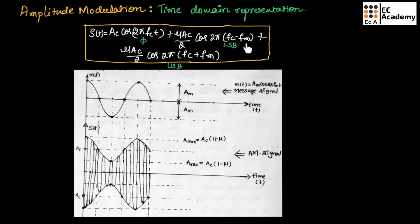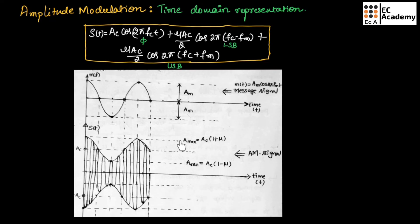This is the equation obtained for the AM signal in time domain representation, and this is its waveform representation. The message signal has a peak value of am, represented as m(t) = am·cos(2π·fm·t). In the amplitude modulated signal, the amplitude of the carrier is varied while frequency and phase remain constant. The maximum peak value is A_max = ac·(1 + μ) and the minimum peak value is A_min = ac·(1 − μ).